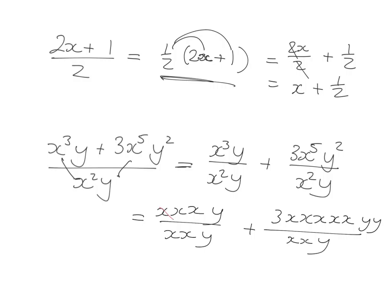Alright, let's go for cancelling those two with that, that with that, and so that just leaves us with an x. And then over here 2 x's with 2 x's, one of the y's with one of those y's, and so I'm left with a 3. I've got x cubed and I've got a y.